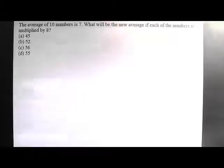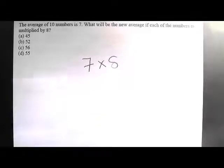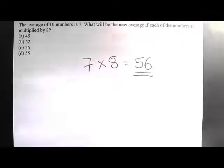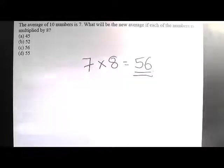The next example asks: the average of 10 numbers is 7. What will be the new average if each number is multiplied by 8? If the average of 10 numbers is 7, then by multiplying every number by 8, it is technically as if you are multiplying the average value itself by 8. So 7 × 8 = 56 is the answer. If every single number is increased by the same factor — whether by addition or multiplication — the same change is reflected in the average value as well.